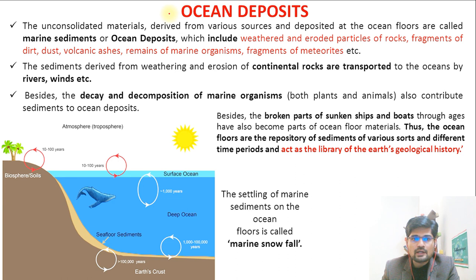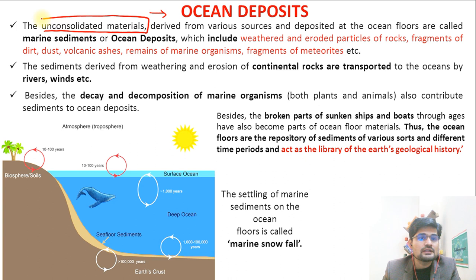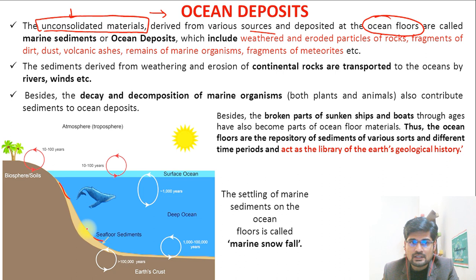We'll cover the factors that contribute to them and the important terminologies associated with marine sediments. Now, after we have already understood about the movement of ocean waters — waves, tides and ocean currents — let's understand the depositional features and ocean deposits. These are unconsolidated, loose materials derived from various sources and deposited at ocean floors, shelves and slopes, called marine sediments or ocean deposits.